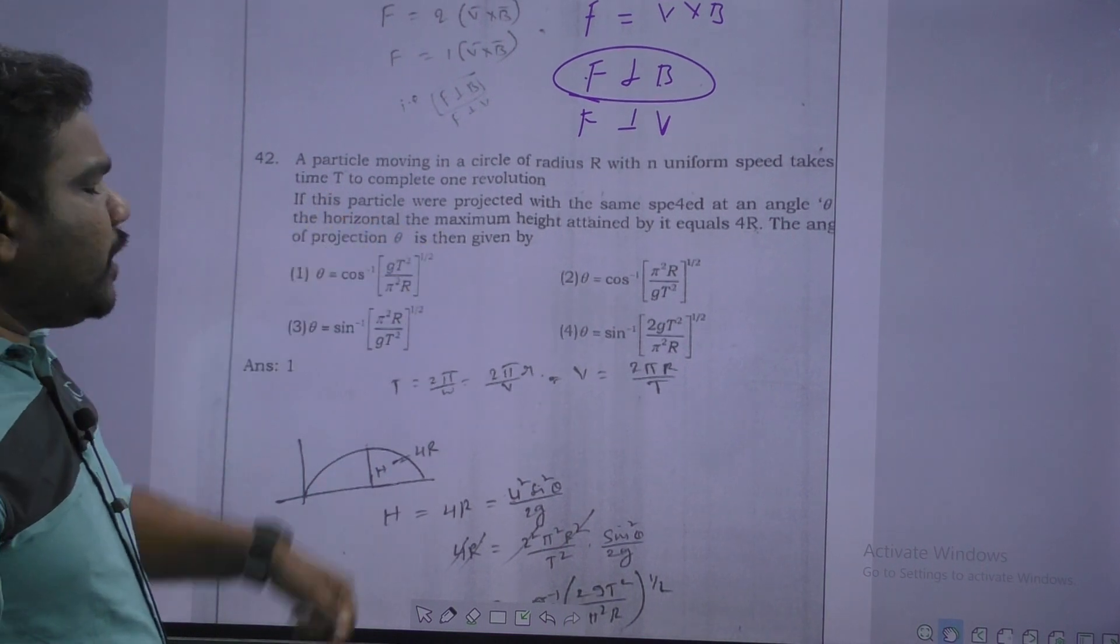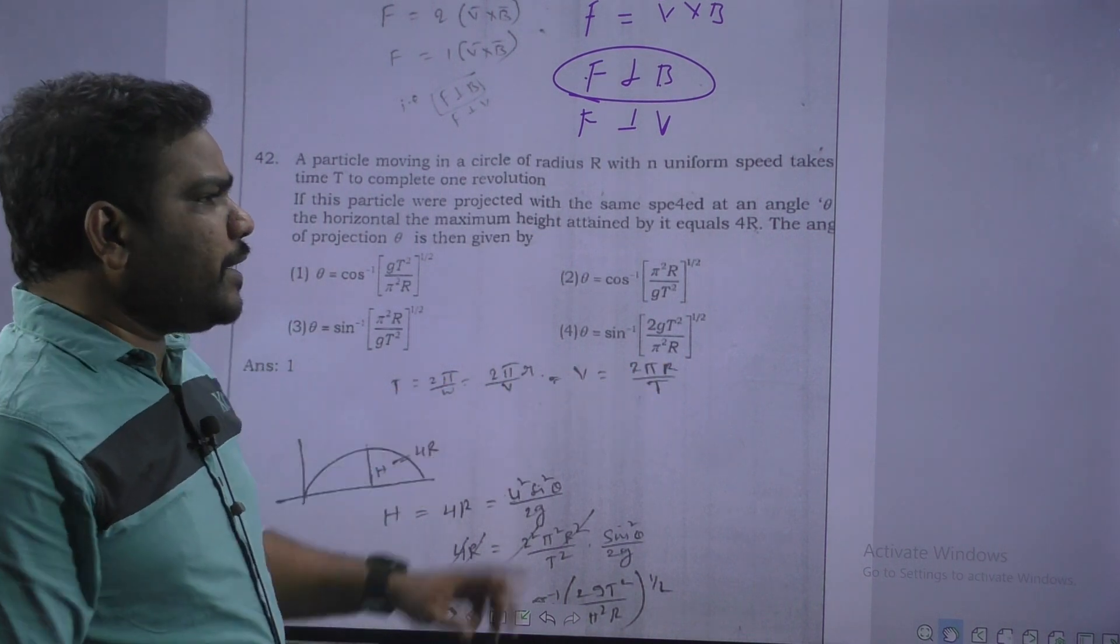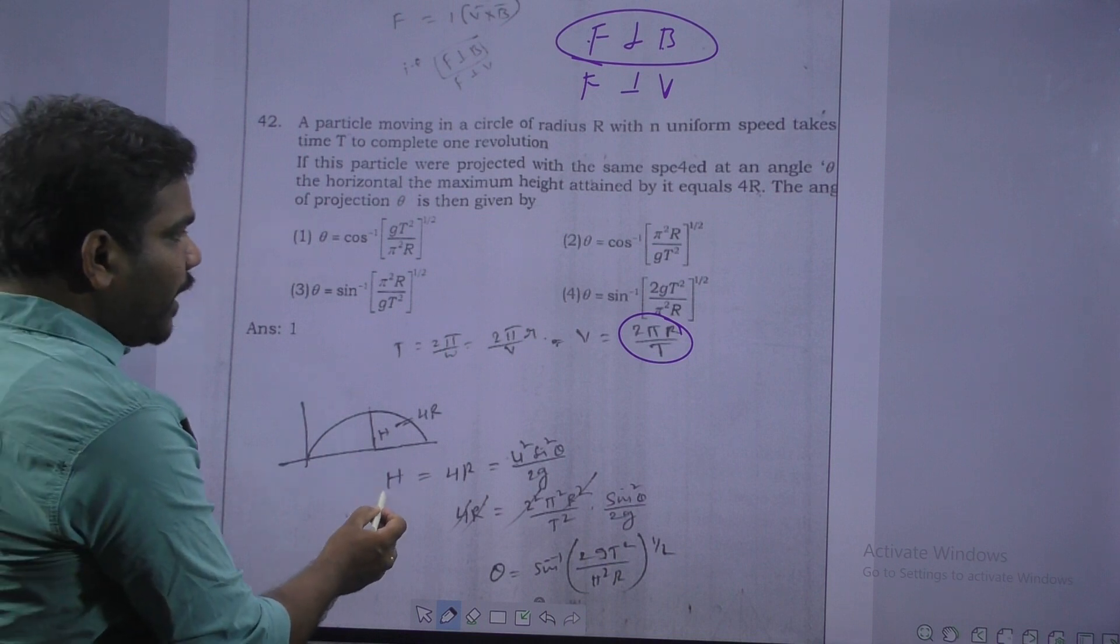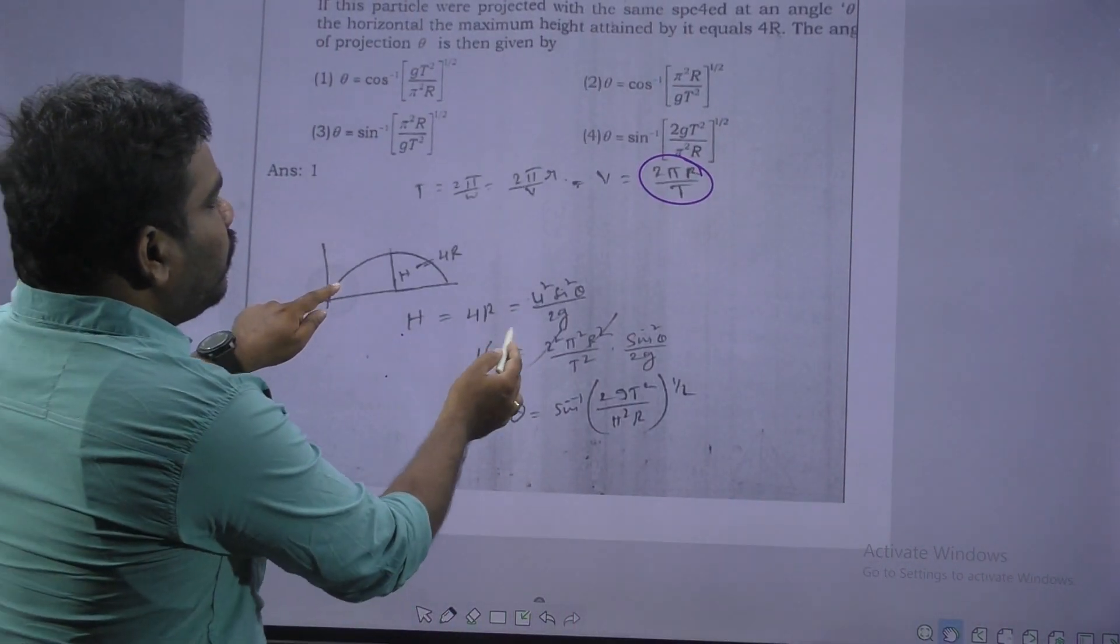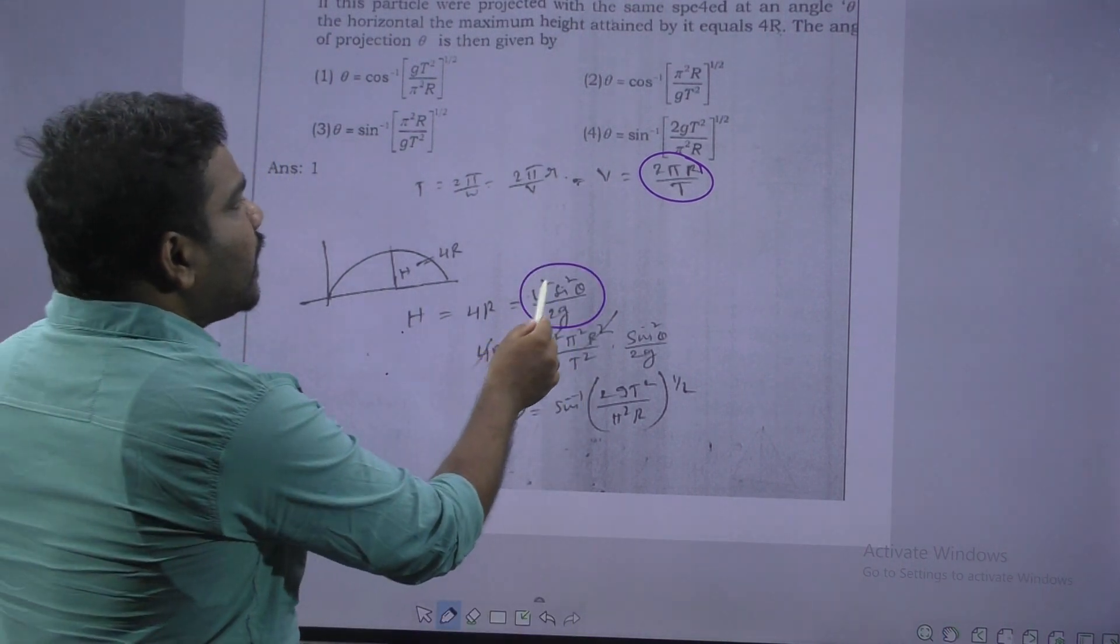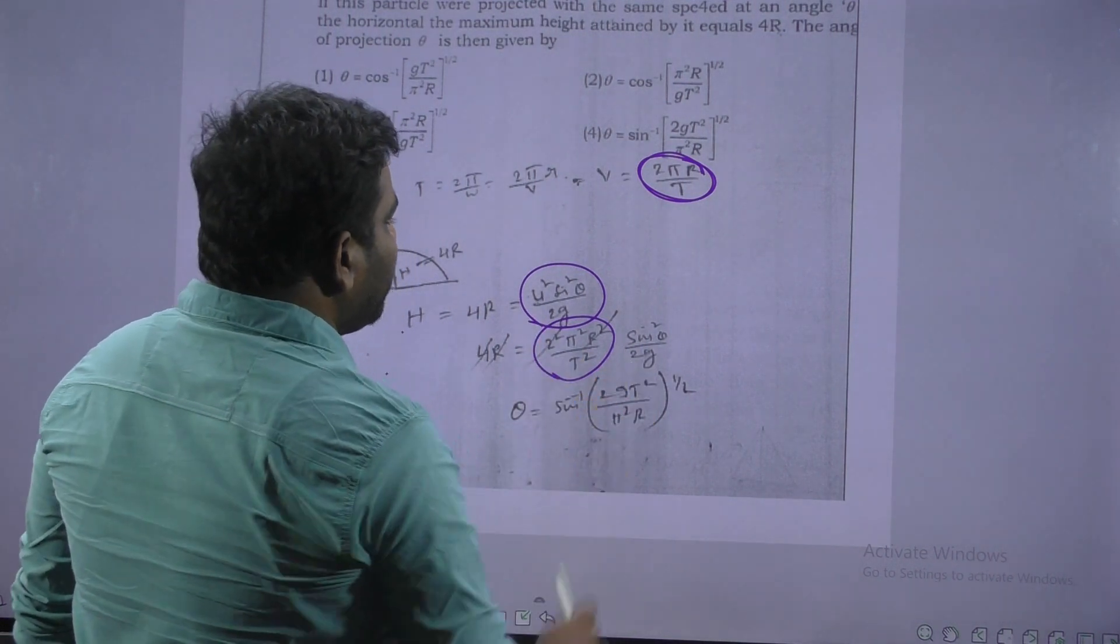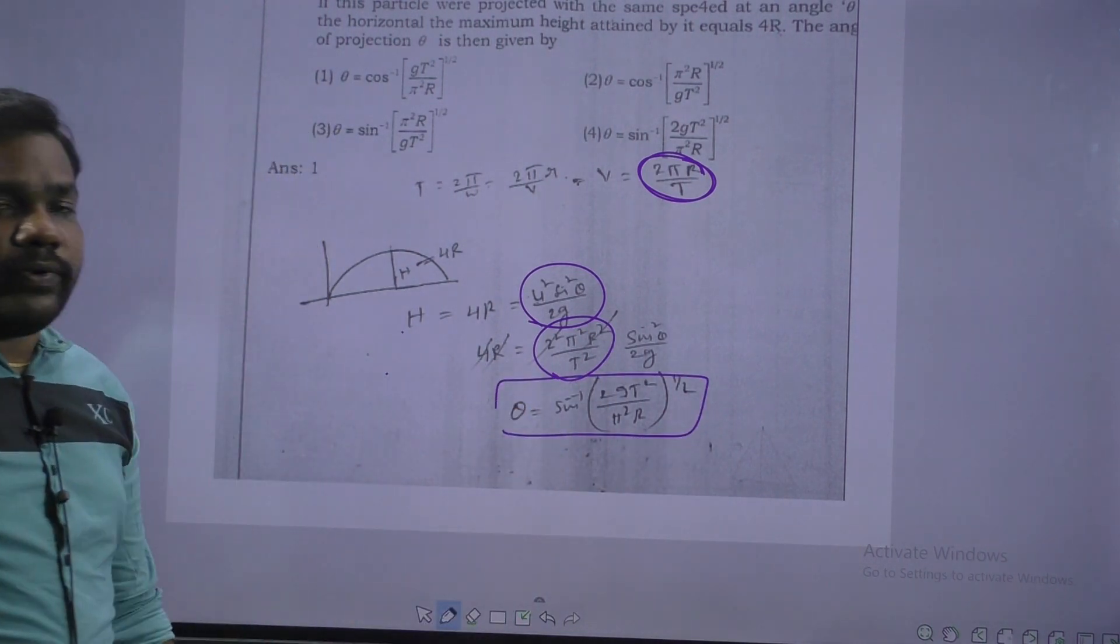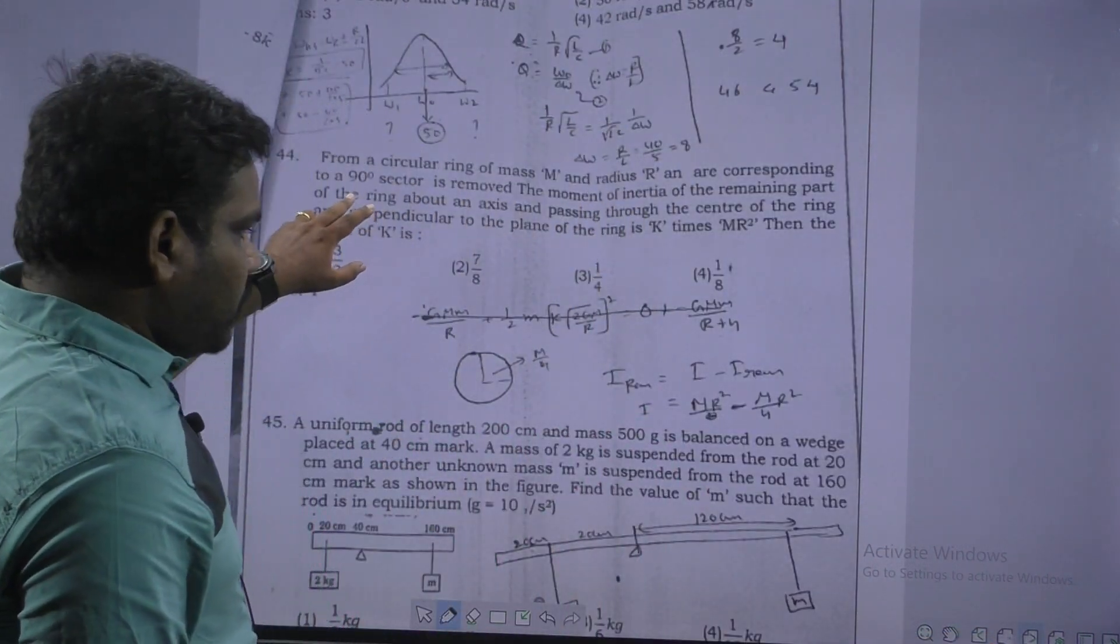Next. This is projectile problem. We told that particle completed one circle. That means time period 2 pi by omega. From that V is equal to 2 pi r by t. First calculate velocity. They are given that maximum height is equal to 4 r. H is equal to 4 r. H means maximum height, that is u square sin square theta by 2 g. But u calculated already here, 2 pi r by t. U square, 4 pi square r square by t square. Just square the u. And remaining sin square theta by 2 g. After calculation r value, 4 and everything cancellation, then theta is equal to sin inverse of 2 gt square by pi square r whole power 1 by 2.